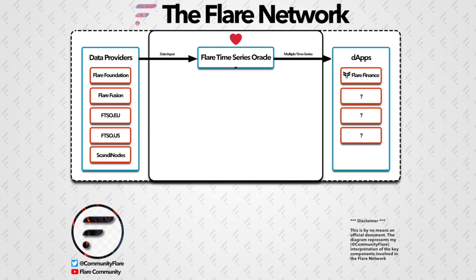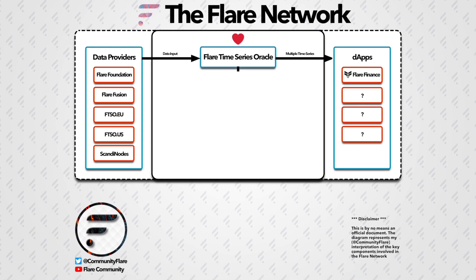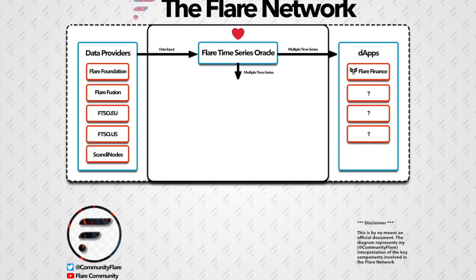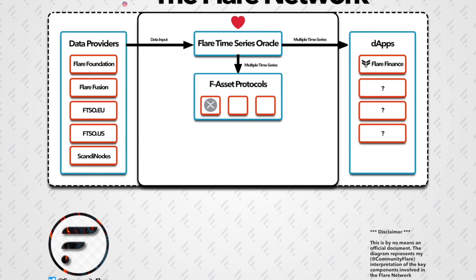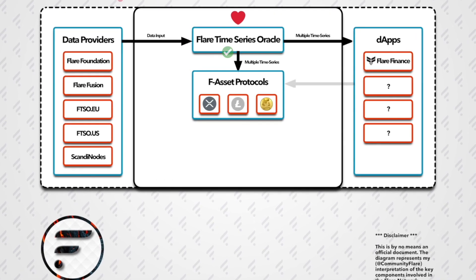The Flare Time Series Oracle will also provide processed price estimates, known as Time Series, to various F-asset protocols running on the Flare Network. An F-asset is an asset which has been transformed into a smart contract equivalent. For each F-asset to be created, they will utilize a corresponding F-system. For the F-system to function, it requires prices from the underlying asset in addition to the price of Spark.